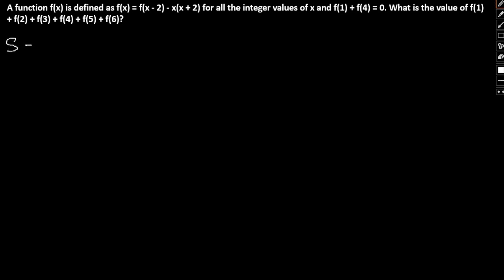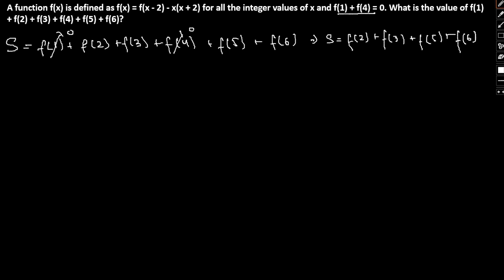So this plus this plus this, they have to be equal to 0. From this term we can further write S = f(2) + f(3) + f(5) + f(6). Okay, so this is the value of S.